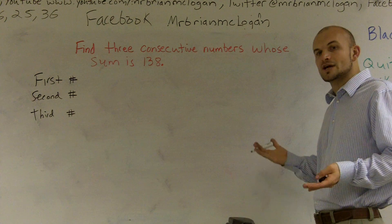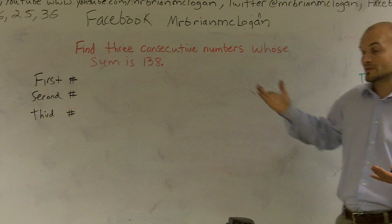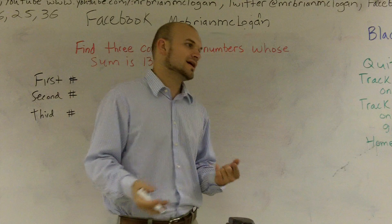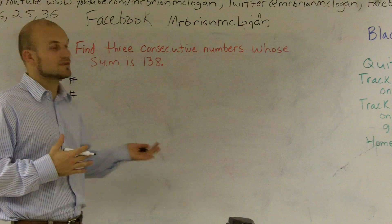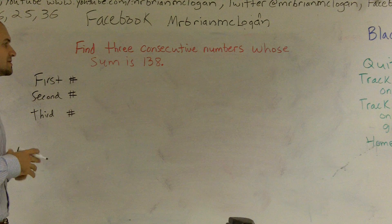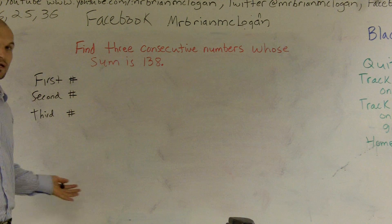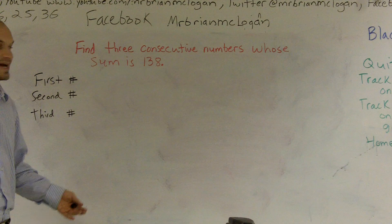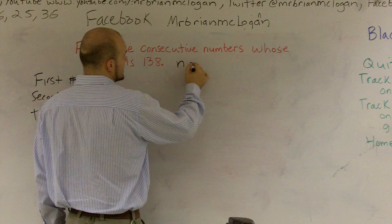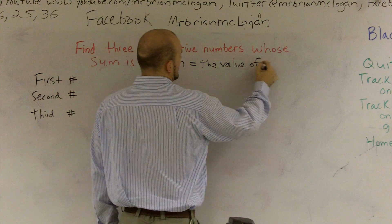We could just start doing guess and check, but when you're doing a standardized test or working through harder problems, you need a method we can use over and over again for problems that might be too hard to guess and check. So it says find three consecutive numbers — let's say we have a number we don't know, so we're assigning a variable.